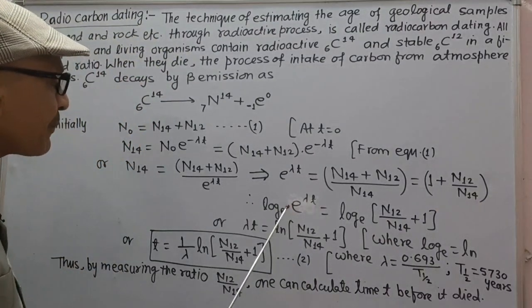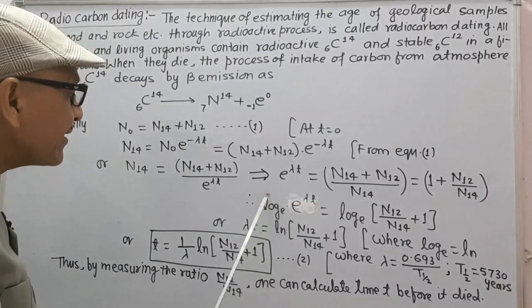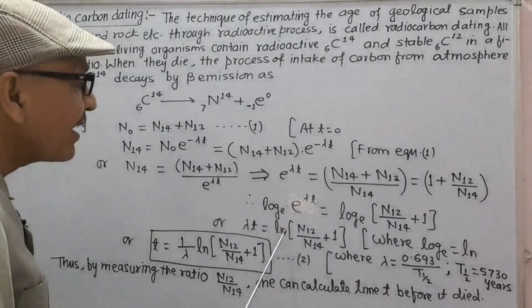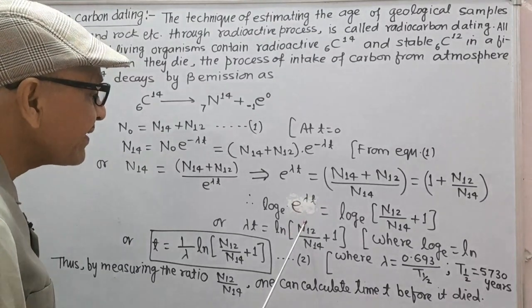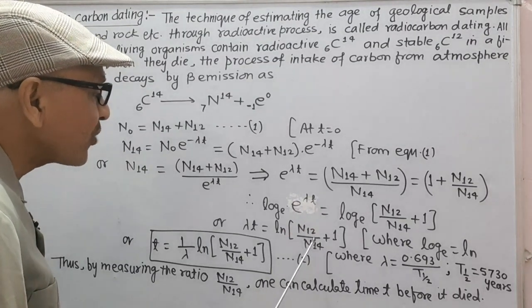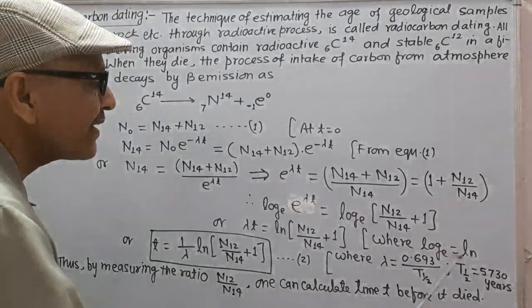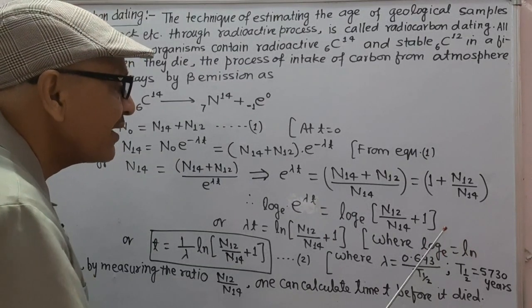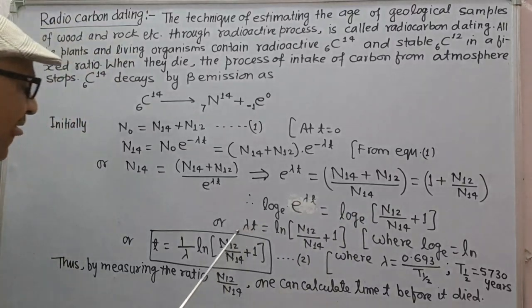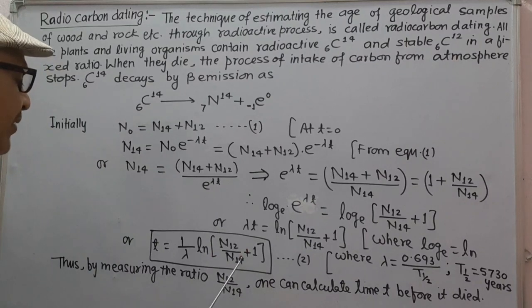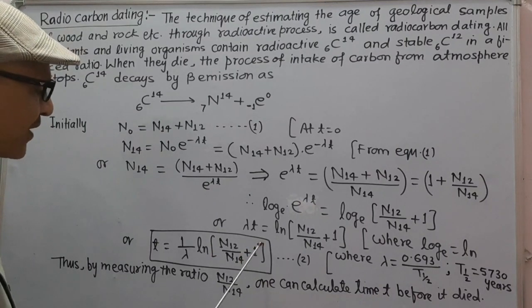This gives lambda t into log e of e, which is 1, so lambda t equals ln of N12 upon N14 plus 1, where log base e is also equal to ln. Which gives t equals 1 upon lambda ln of N12 upon N14 plus 1.